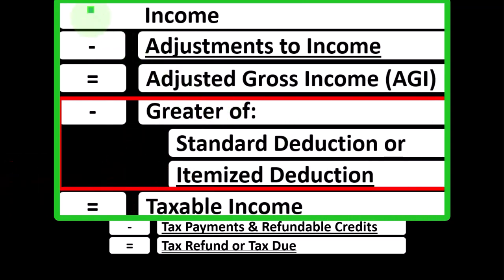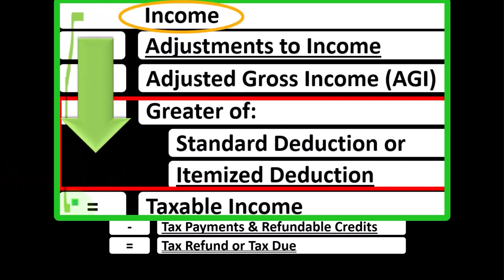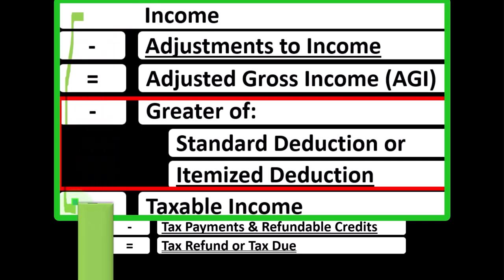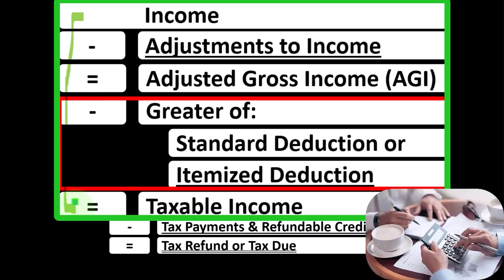Remember, the first half of the income tax formula is basically a funny income statement. Most income statements have income minus expenses resulting in net income — here we have income minus various deductions resulting in taxable income. Notably, for taxes, deductions are good, so we're typically looking for more of them.